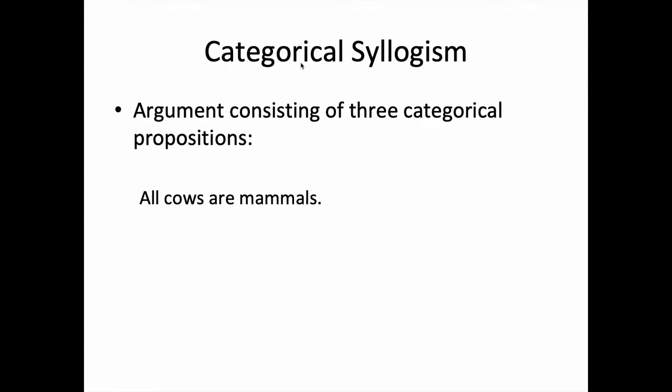For example, all cows are mammals, all mammals are animals, so all cows are animals. A categorical syllogism is in standard form when its elements are ordered as follows.